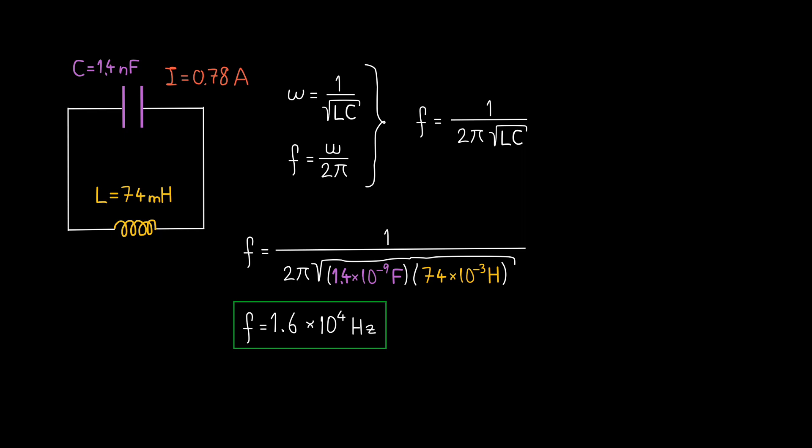Each oscillation means the capacitor will discharge and then it will get charged. It will discharge again with the current in the opposite direction and it will get charged again with the opposite polarity. That's one complete oscillation.